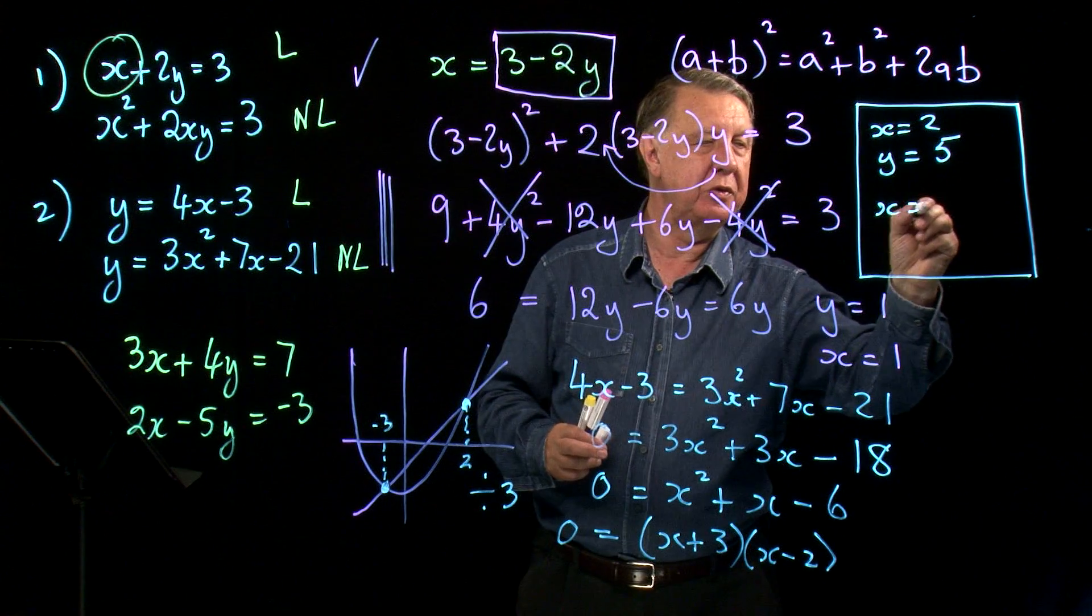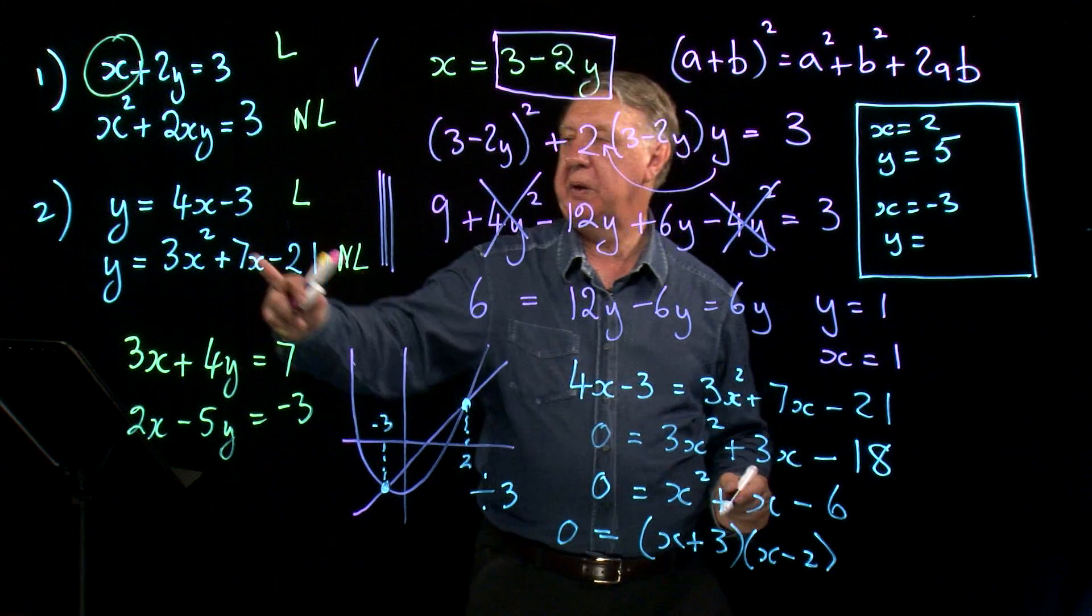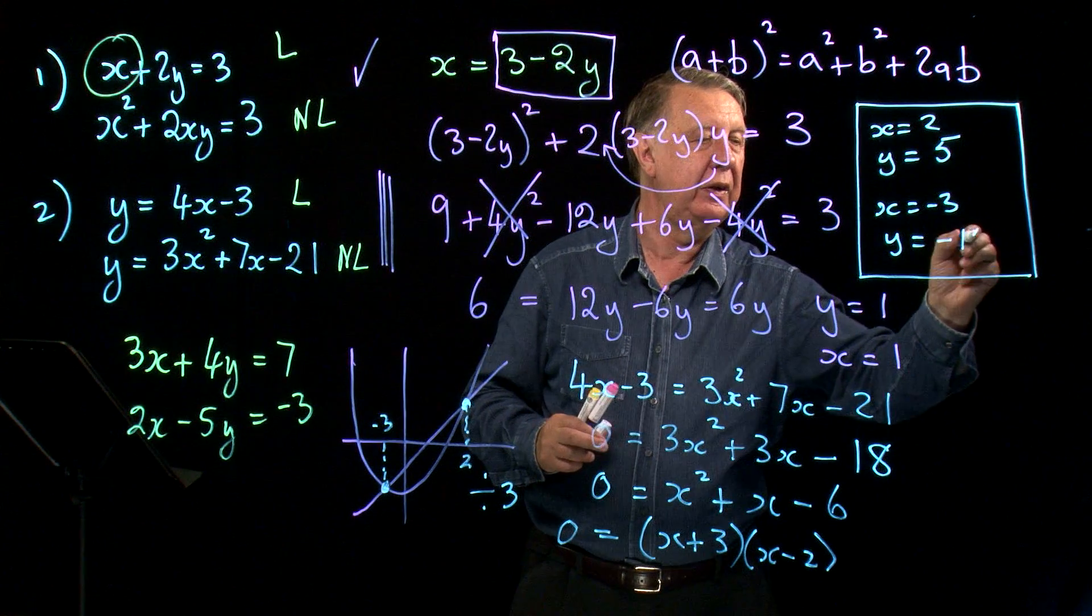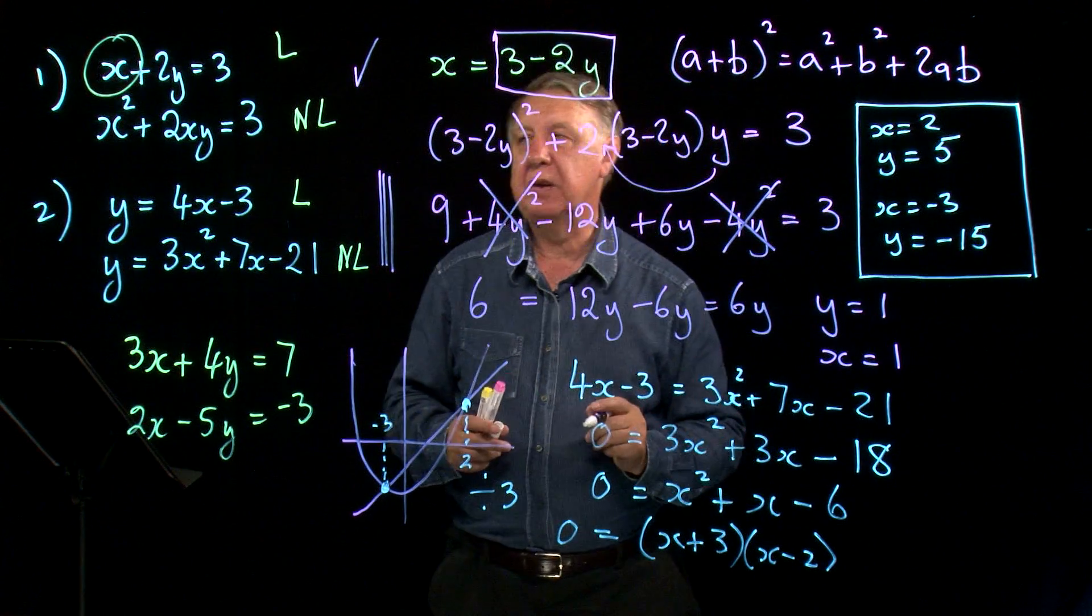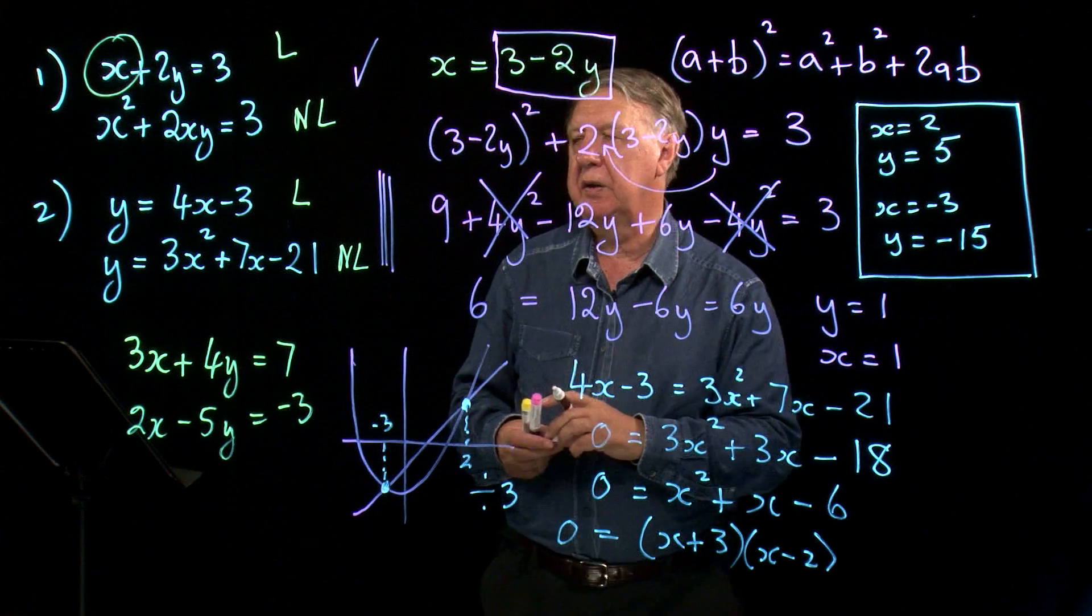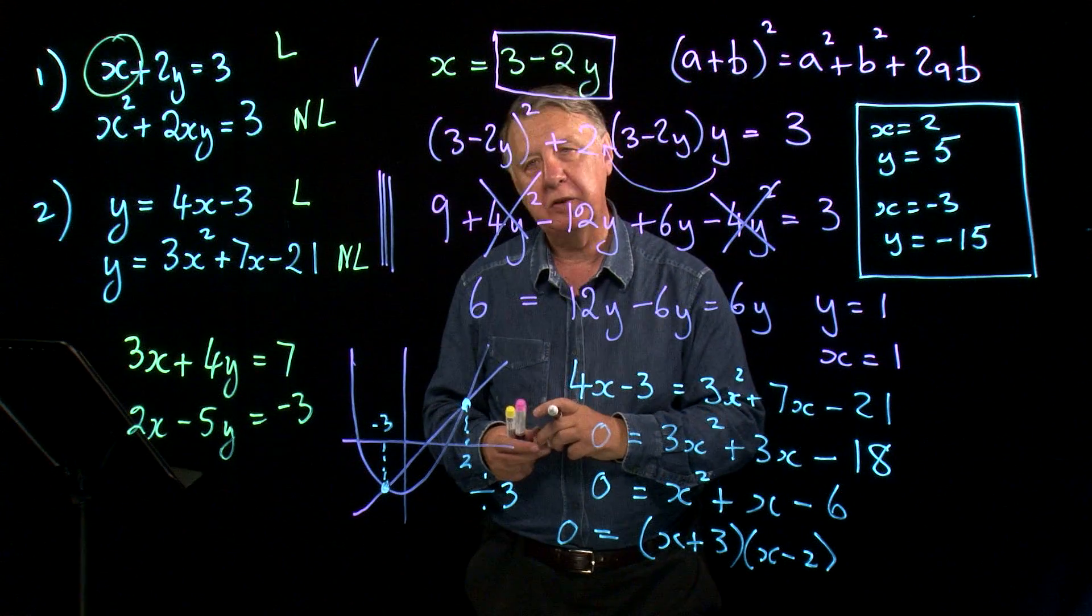And then finally, if x equals negative 3, y will be negative 12 take away 3 is negative 15. So there we are, two methods of solving non-linear simultaneous equations.